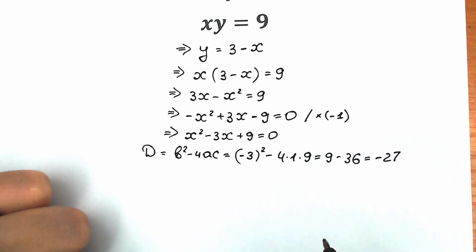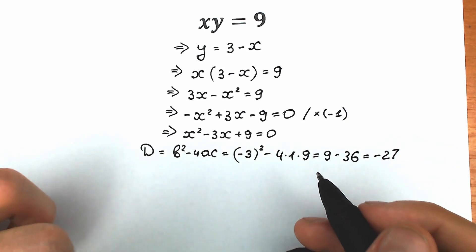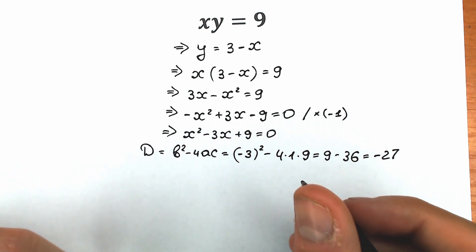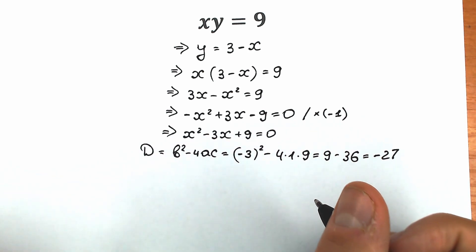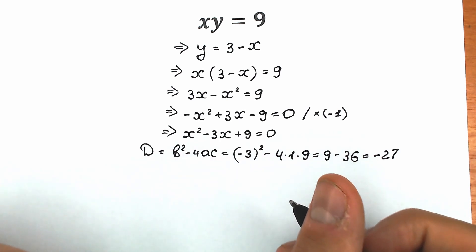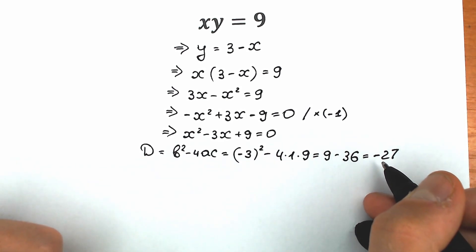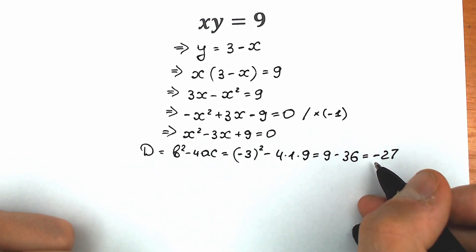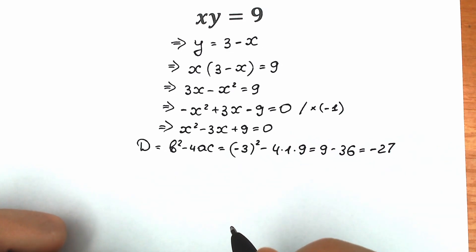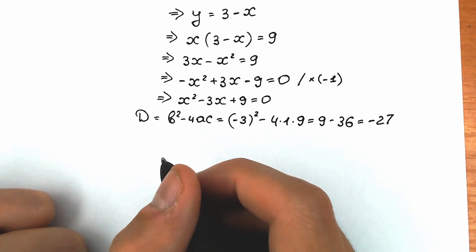A lot of students are confused about this minus 27. They say our discriminant is negative — how can we solve this question? There are no real number roots here, and they are absolutely correct. We don't have real number roots. But don't forget about complex solutions! We don't have real number solutions because the discriminant is negative, but let's see what will happen in the complex plane, in terms of complex numbers.